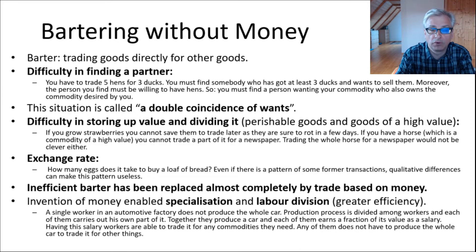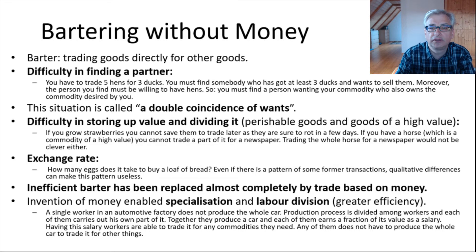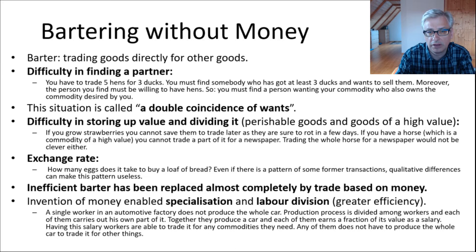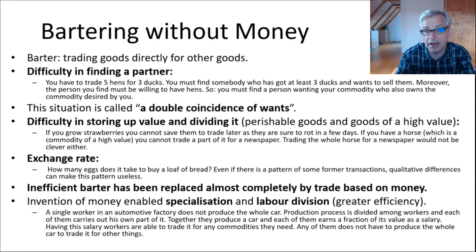What was the world without money? At first, people didn't have any money and they used barter — trading goods directly for other goods. Barter is pretty problematic as it requires a so-called double coincidence of wants. For a transaction to happen, I must find someone who has the product I'm interested in, and that person must also be interested in the product I possess so we can make the exchange.